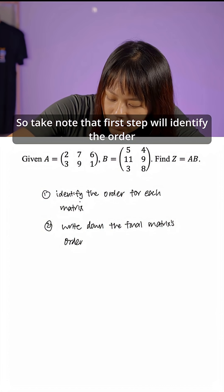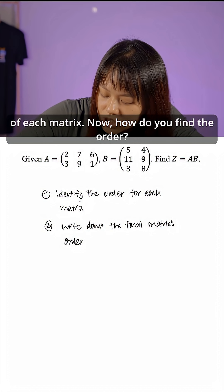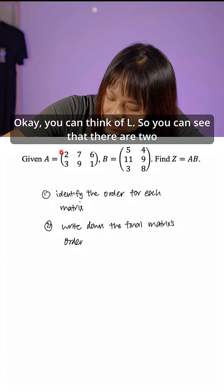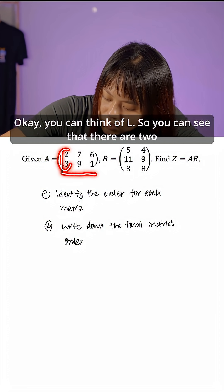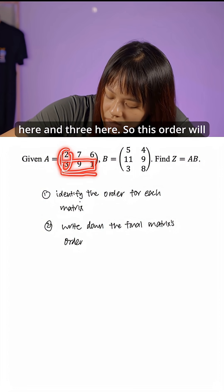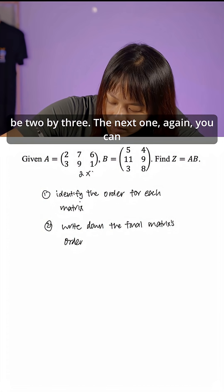Take note that the first step is to identify the order of each matrix. Now how do you find the order? You can think of L. So you can see that there are 2 here and 3 here. So this order will be 2 by 3.